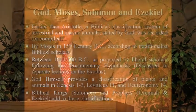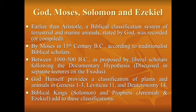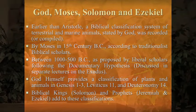But what many people do not know is that even before Aristotle there was God's classification system. The biblical classification system was authored by Moses in the 15th century BC, according to traditionalist biblical scholars. Even according to liberal scholars — who date it to 1000–500 BC — this classification system still predates Aristotle, making it the oldest classification system. The word 'taxonomies' is just another way of saying classification system.